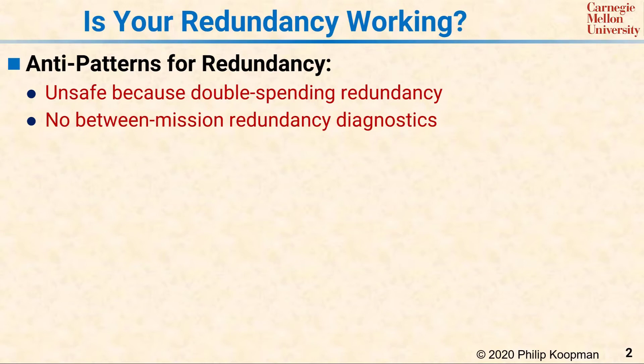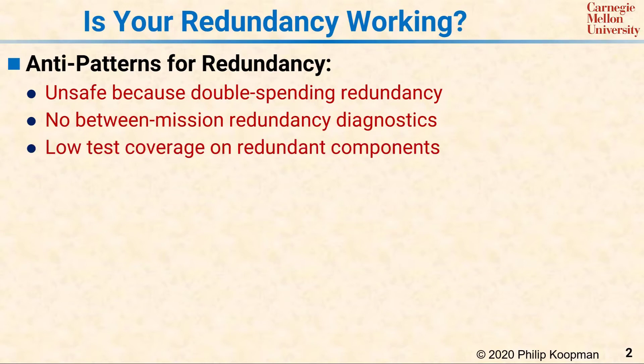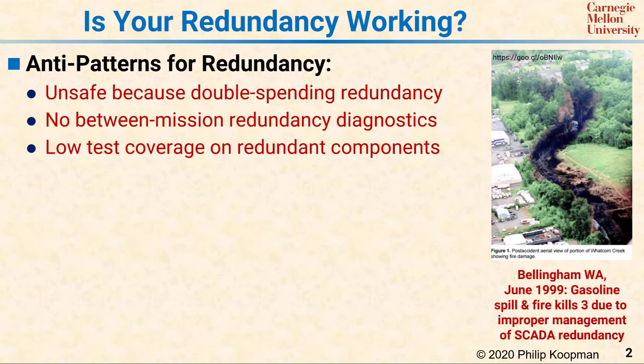You may also have a problem with redundancy management if you have low test coverage on your redundant components when you do that component testing. In June 1999, a gasoline pipeline in Bellingham, Washington ruptured, releasing 237,000 gallons of gasoline.